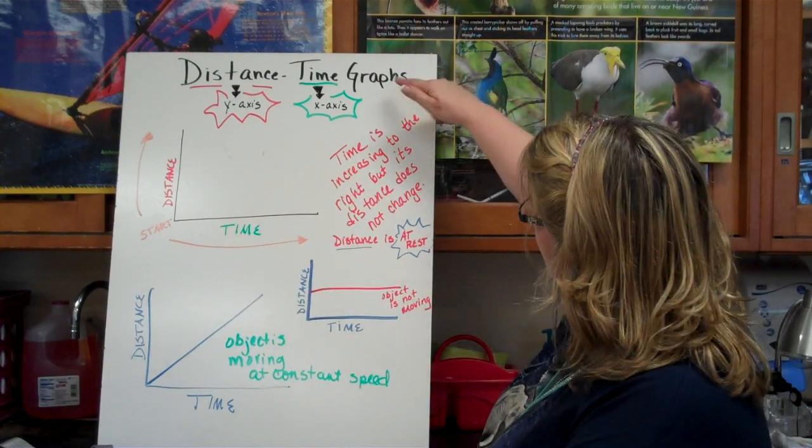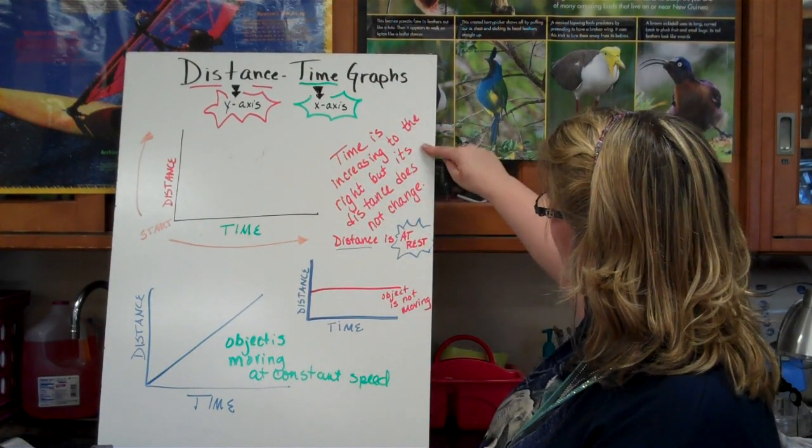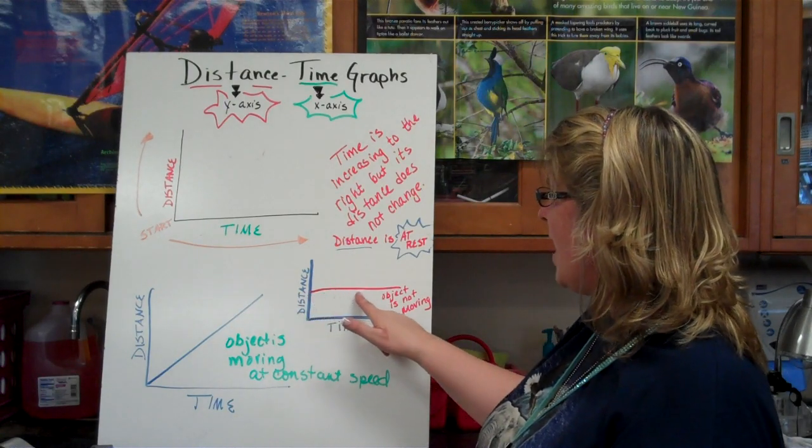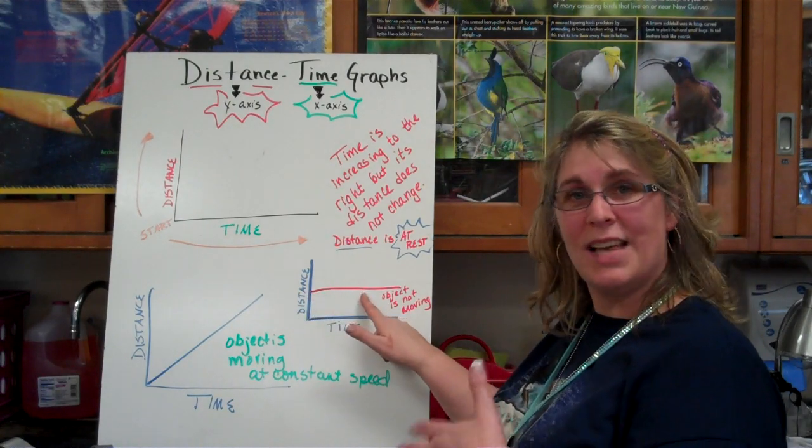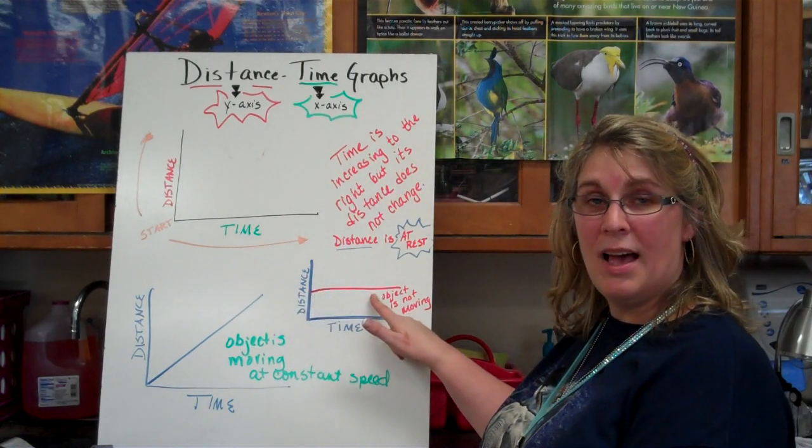So, time is increasing. Now, let's look at this one. And this one represents that time is increasing to the right, but the distance doesn't change. And over time, you've got a flat line and the object is actually not moving. So, the distance stays the same over whatever period of time.